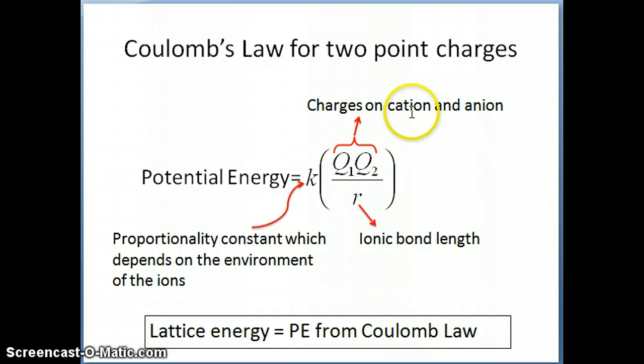What's Q1, Q2, and what's R? Well, Q1, Q2 are charges on the cation and anion. If I'm talking about sodium chloride, then the Q1 will be plus one for sodium and then the Q2 would be minus one for chloride. If I'm talking about magnesium chloride, then the Q1 will be plus two because magnesium has a plus two charge, the Q2 will still be negative one because chloride is a negative one ion.